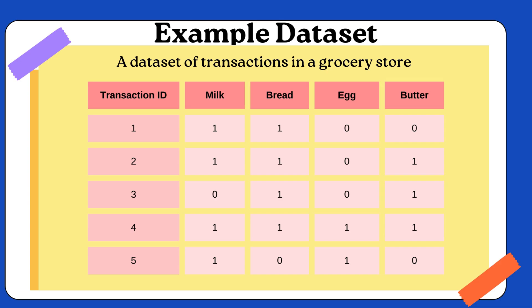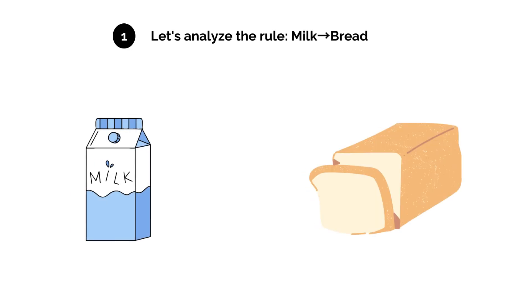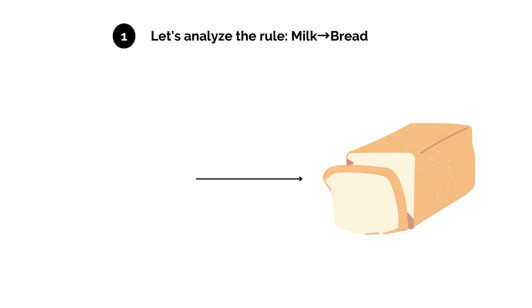Let's see an example data set, a data set of transactions in a grocery store. Let's analyze the rule if-then statements.